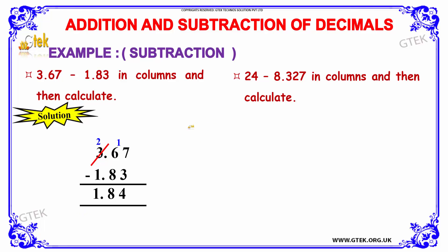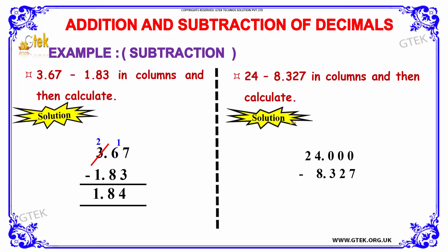So the answer is 1.84. Let's move on to the next problem. The question is 24 minus 8.327. Since 24 is a whole number, we have added 3 zeros to match the decimal places.